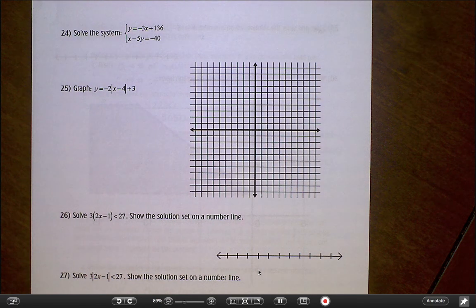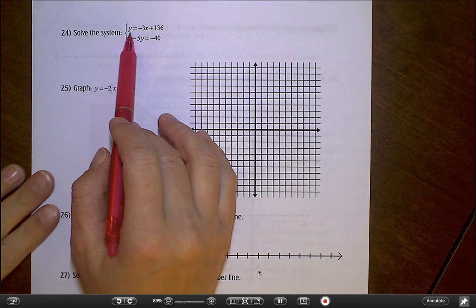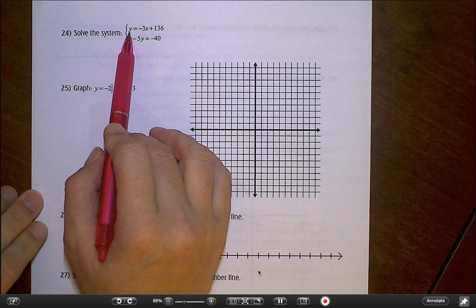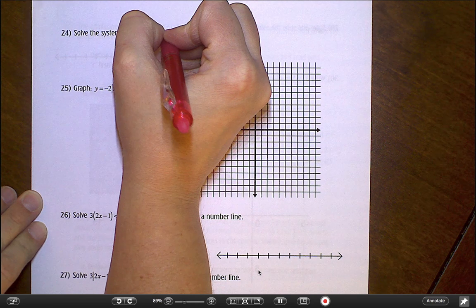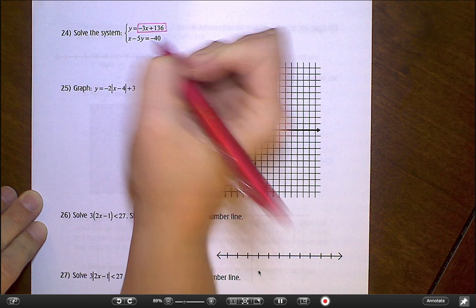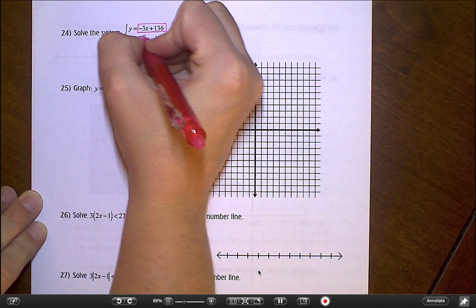We start off here with number 24 with a system. You really can choose if you want to do substitution or elimination here. The fact that this has y all by itself here makes me think substitution is going to be easier to do. So I'm going to take this thing that they gave me for y, and I'm going to plug it in for y right here.